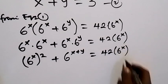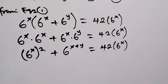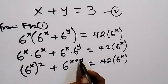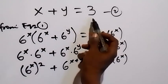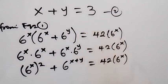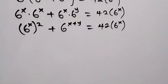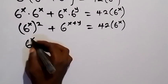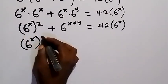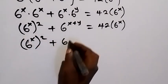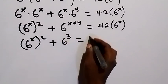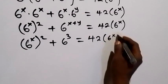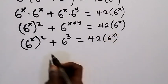Since x plus y equals 3 from equation 2, we can substitute to get 6 raised to power 2x plus 6 raised to power 3 equals 42 times 6 raised to power x. And 6 raised to power 3 is 216.